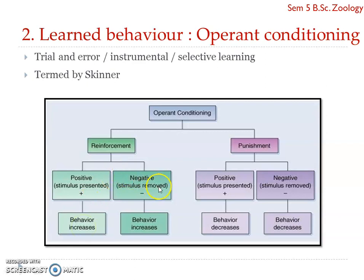With negative reinforcement, behavior also increases. For example, if a child is told to do something and is then given a chocolate for performing that behavior, that is positive reinforcement. The child then has a tendency to repeat that particular behavior — that is one way of ensuring a child performs a specific behavior.